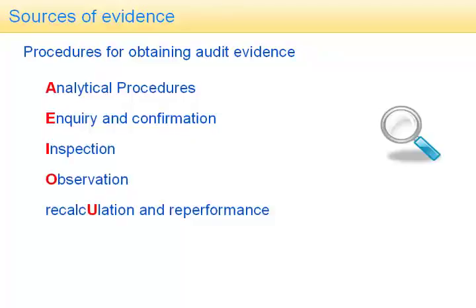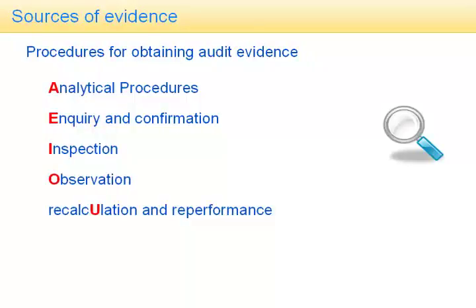Inquiry and confirmation: we can ask management, or confirm from third parties the existence of certain assets and liabilities. We can inspect items. We can observe — for example, we could observe how goods are dispatched, and this could give us some evidence that sales are being recorded properly. And finally, we can carry out recalculations and re-performances — that, for example, would give us evidence that the depreciation calculations were correct. Remember, no other sources of evidence exist.